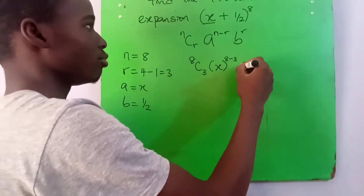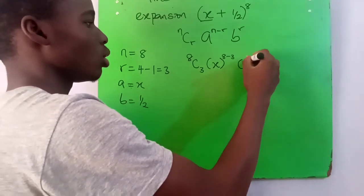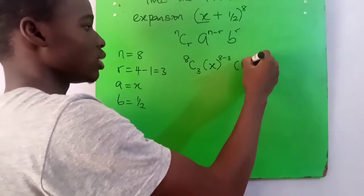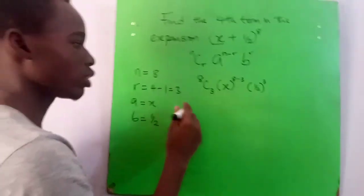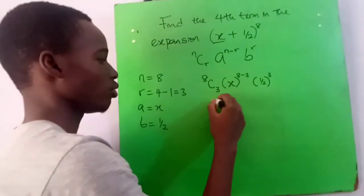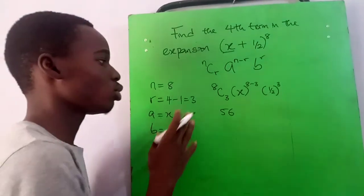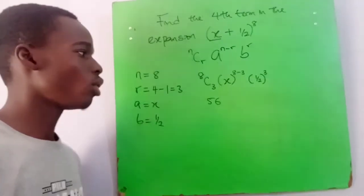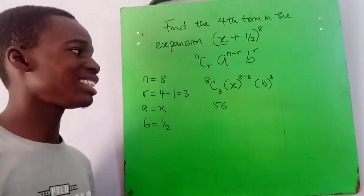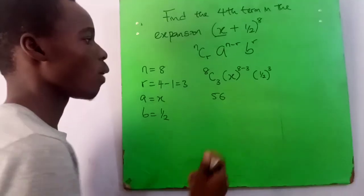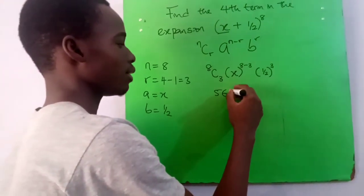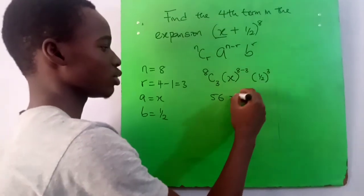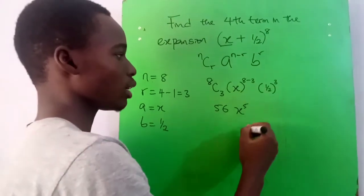8 combination 3 is 56. If you don't know how we got 56 as 8 combination 3, watch out for the video I taught it in the description below. And we now have x raised to the power 8 minus 3 is 5, then one over two raised to the power of three.